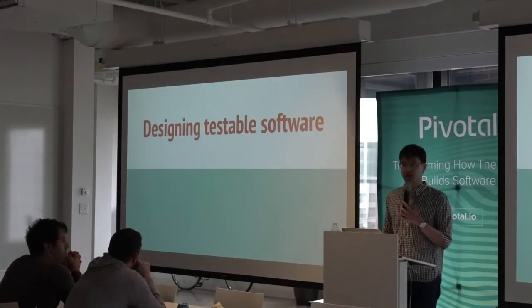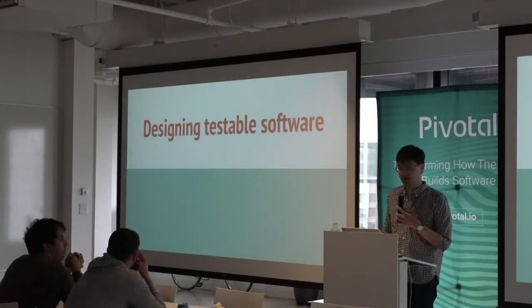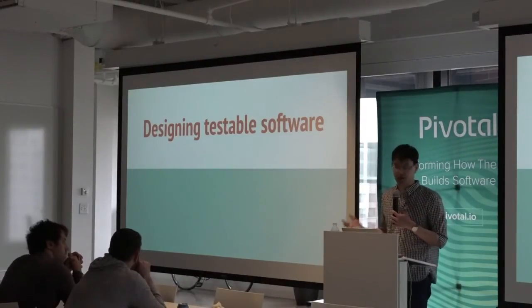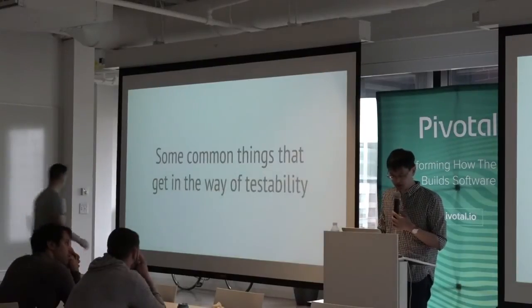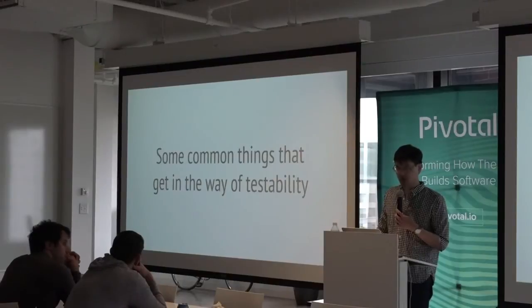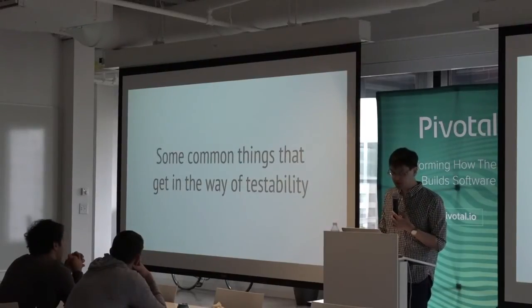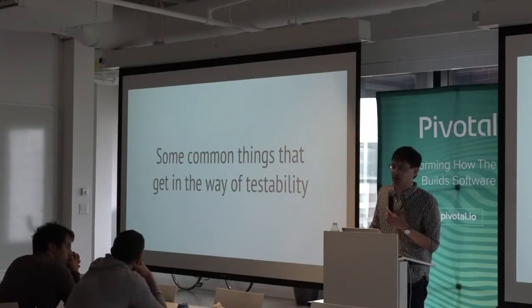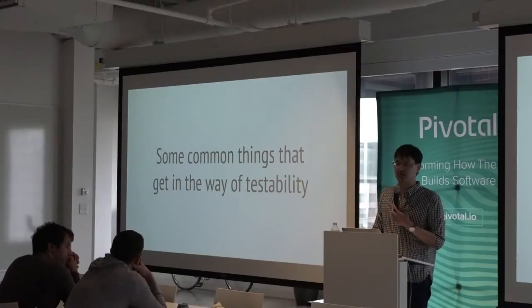The meat of my talk is really going to be about what, in practice, are some examples of things that make code more or less testable. We're going to see some actual code examples — contrived but actual code — to help illustrate some of these points. Let's look at a few common patterns that I see in real software that make testability more difficult, and I want to quickly open it up to the audience. Does anyone have anecdotal experience of something they found really difficult to test?